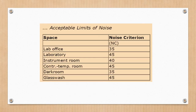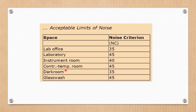Here is one more example of acceptable limits of noise for different spaces with their noise criteria values. For a lab office, the noise criteria should be 35. For a laboratory, it should be 35. For an instrument room, it should be 40. For a controlled temperature room, it should be 45. For a dark room, it should be 35. For a glass box, it should be 45. There are various spaces which have different noise criteria recommended by various standardizing agencies.